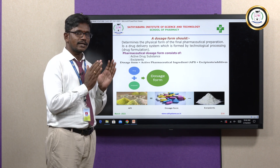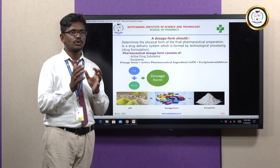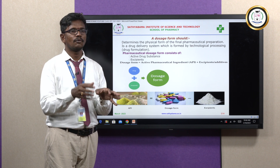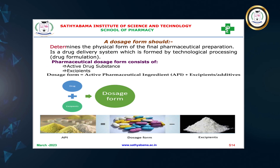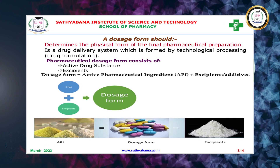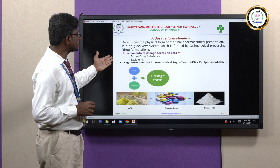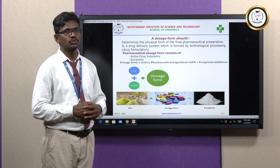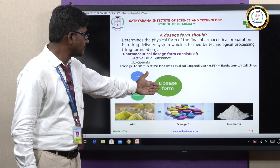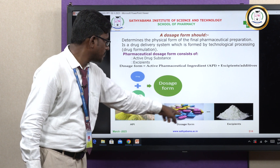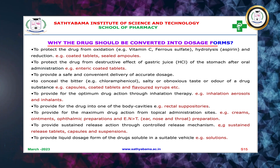As mentioned, a drug should never be taken in a pure form — it should be converted into a dosage form. A dosage form is a simple form for easy absorption to produce good bioavailability. It determines the physical form of the final pharmaceutical preparation, acting as a drug delivery system formed by technological processing. A pharmaceutical dosage form contains two things: the API and the excipient. So why should we convert the drug into a dosage form?